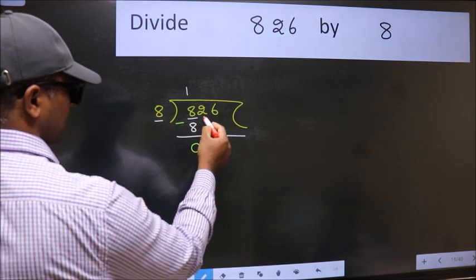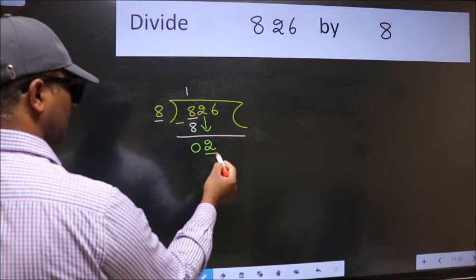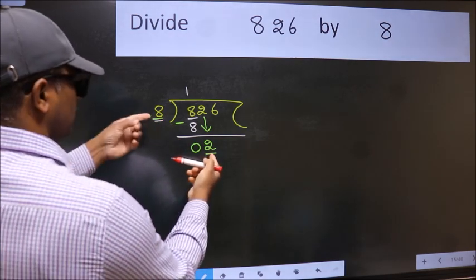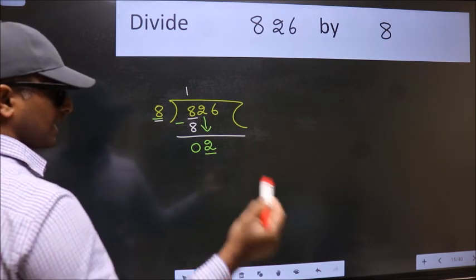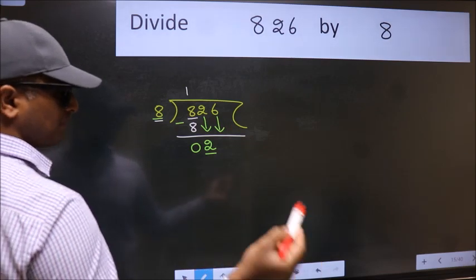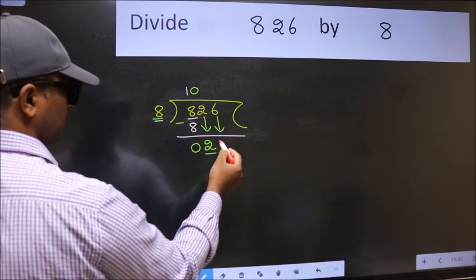After this, bring down the beside number. So 2 down. Now here we have 2 and here 8. 2 is smaller than 8, so we should bring down the second number. And the rule to bring down the second number is put 0 here. Then only we can bring this number down.